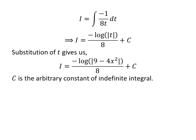Let us substitute t in terms of x. As we had assumed t equals 9 minus 4x squared, so I equals minus natural log of the absolute value of 9 minus 4x squared upon 8 plus C.